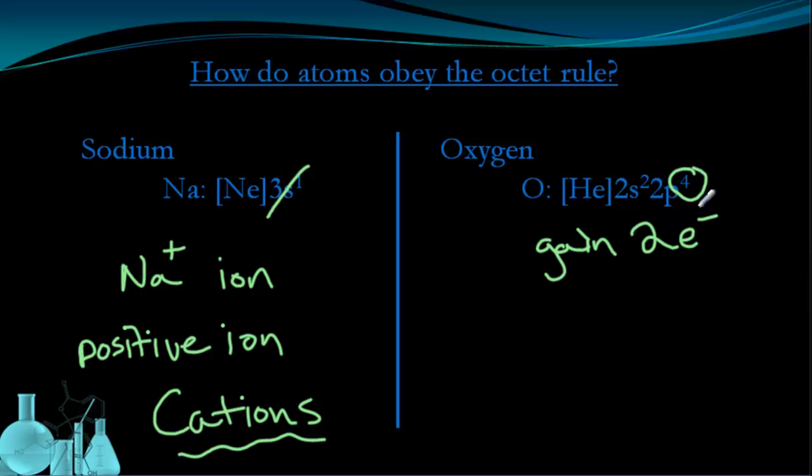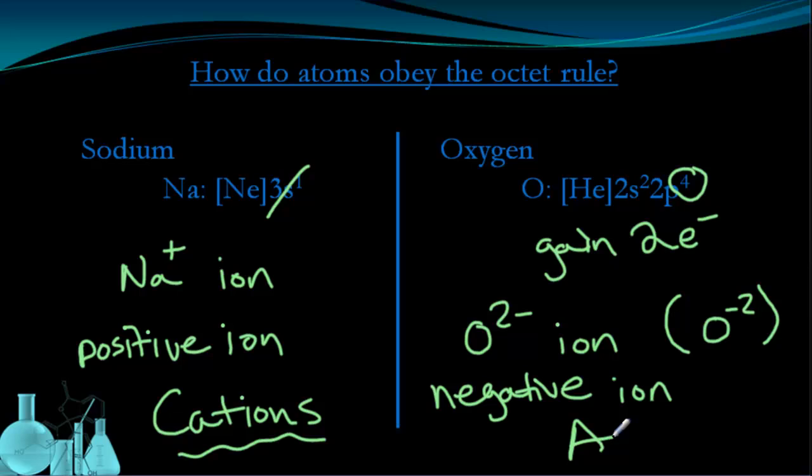So it forms an oxygen 2 minus ion. It has a negative 2 charge. This is the same thing, by the way, as writing oxygen minus 2 like that. Both of these notations tell us that it has a negative 2 charge. So this forms a negative ion. I gained negative electrons, so this forms a negative ion. And we call those anions.